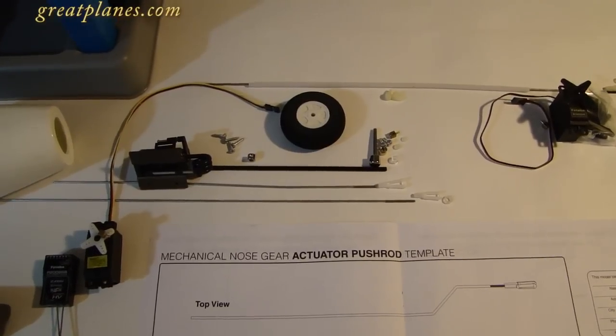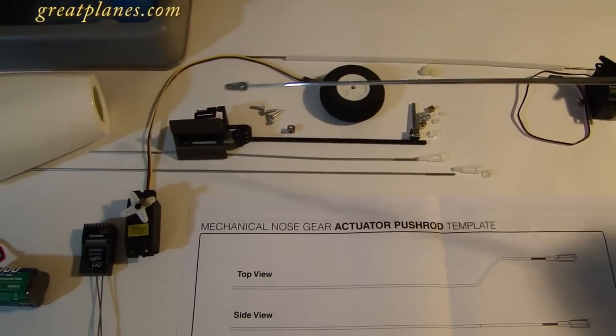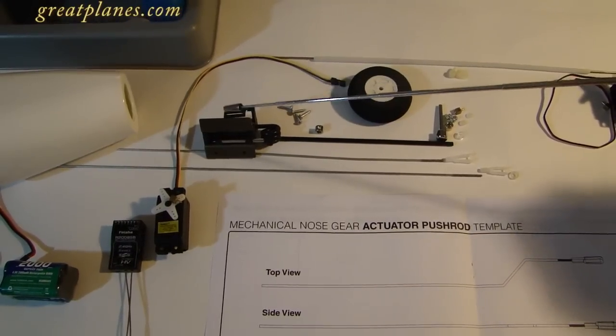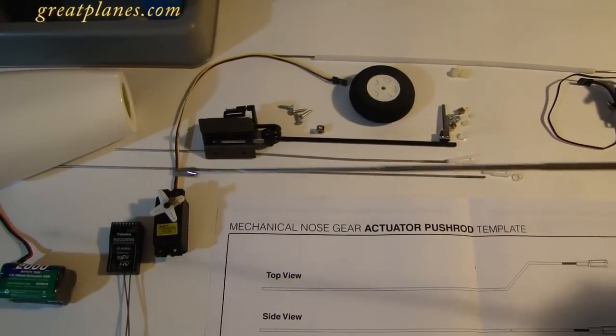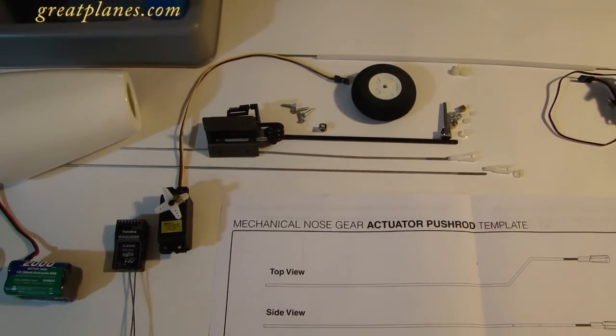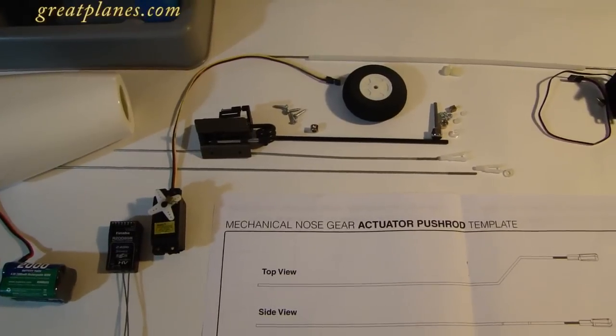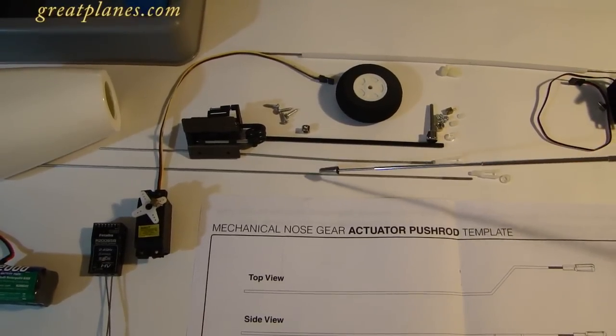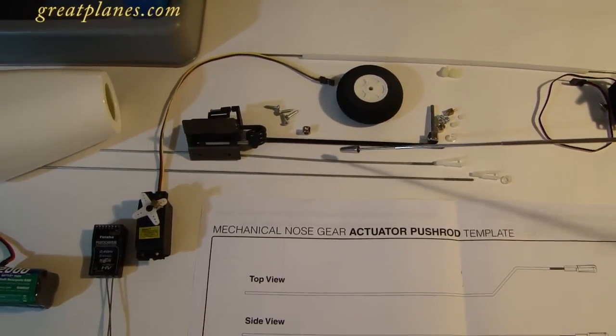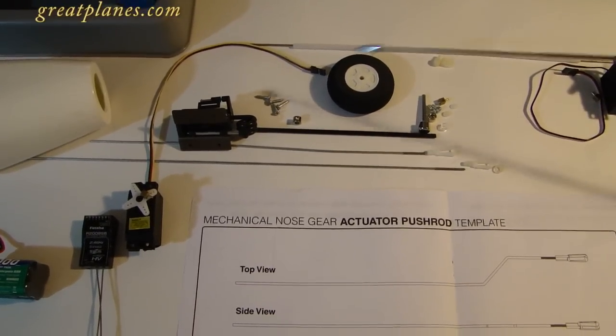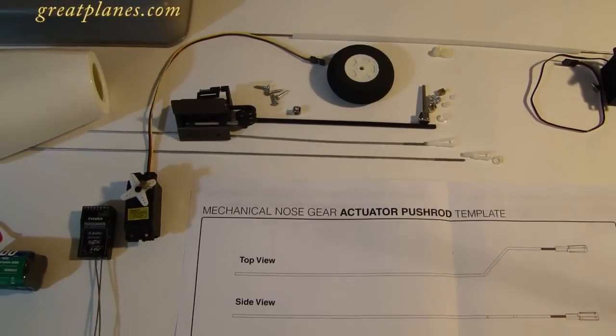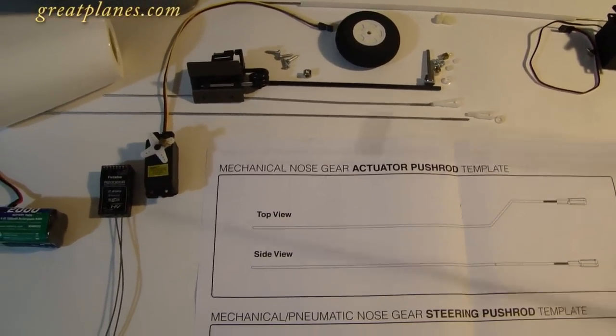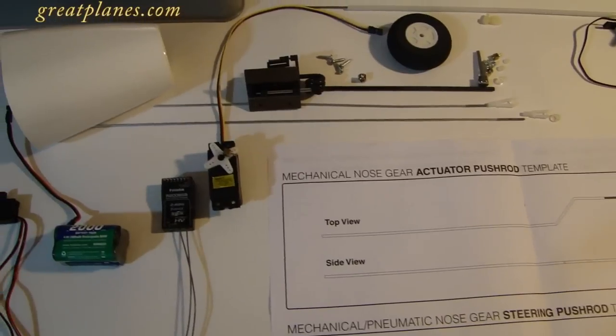On to the nose landing gear. This is our nose landing gear mechanical retract landing gear assembly. We have our servo to drive that assembly and it is a Hobbico CS63 low profile servo. We have our actuator pushrod, our nose landing gear steering pushrod, all the hardware that you're going to need to install these items into the fuselage, and our template for our nose landing gear pushrod.